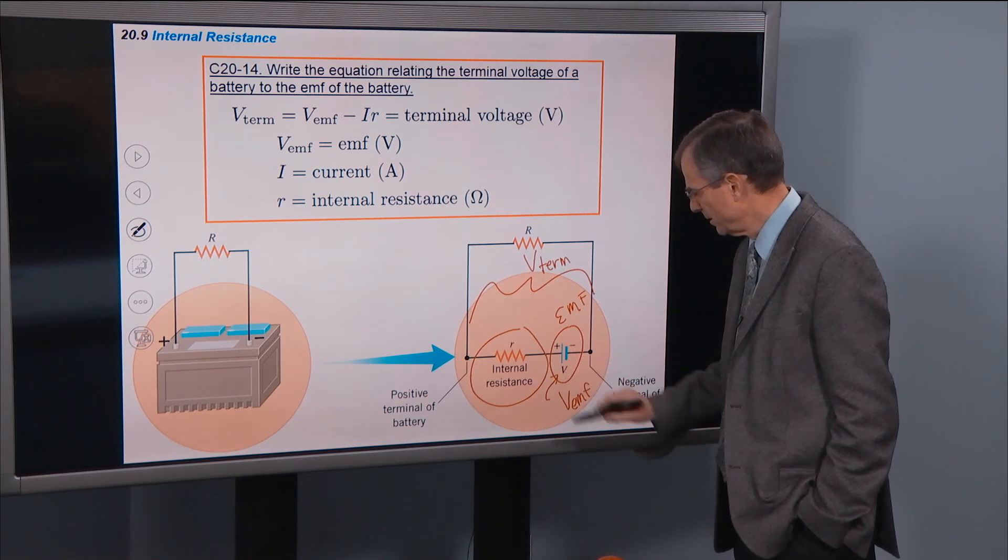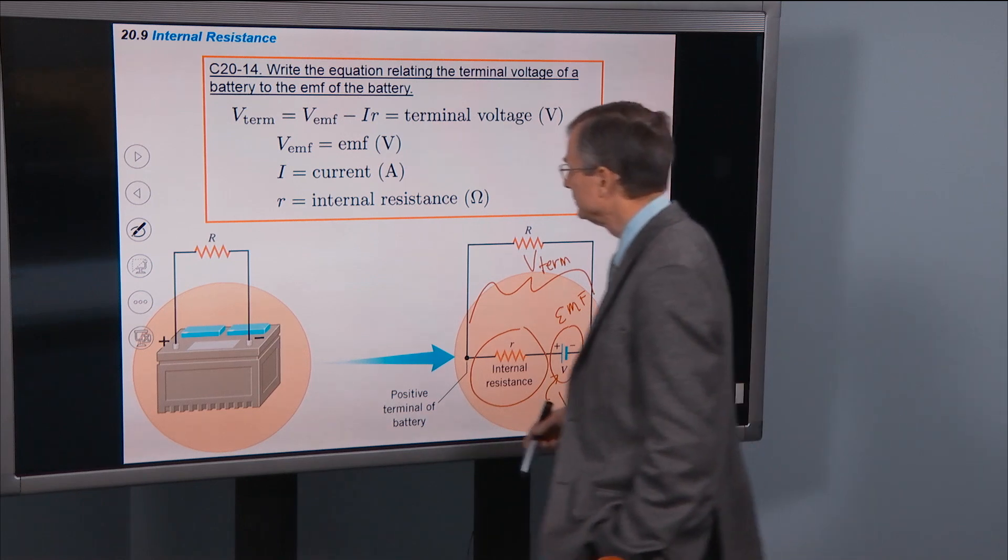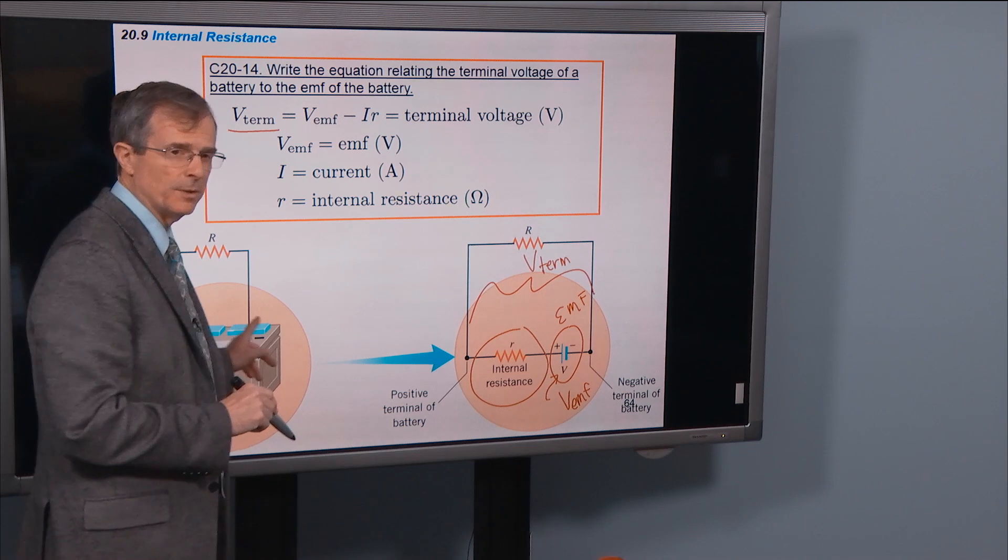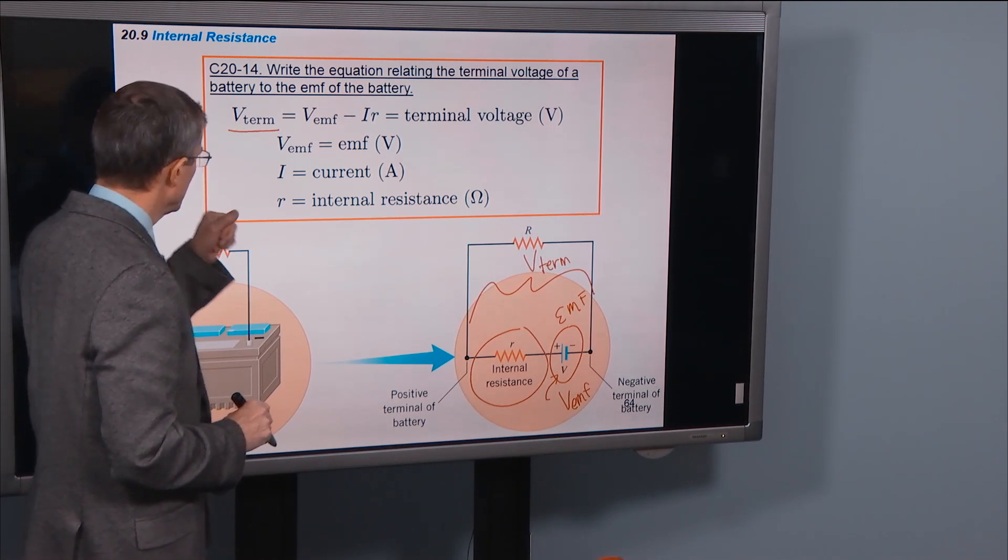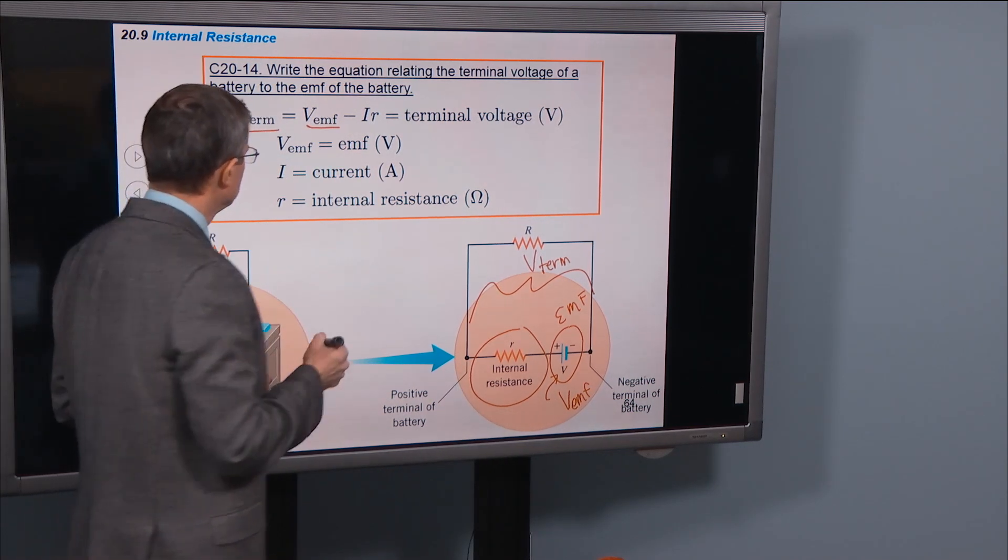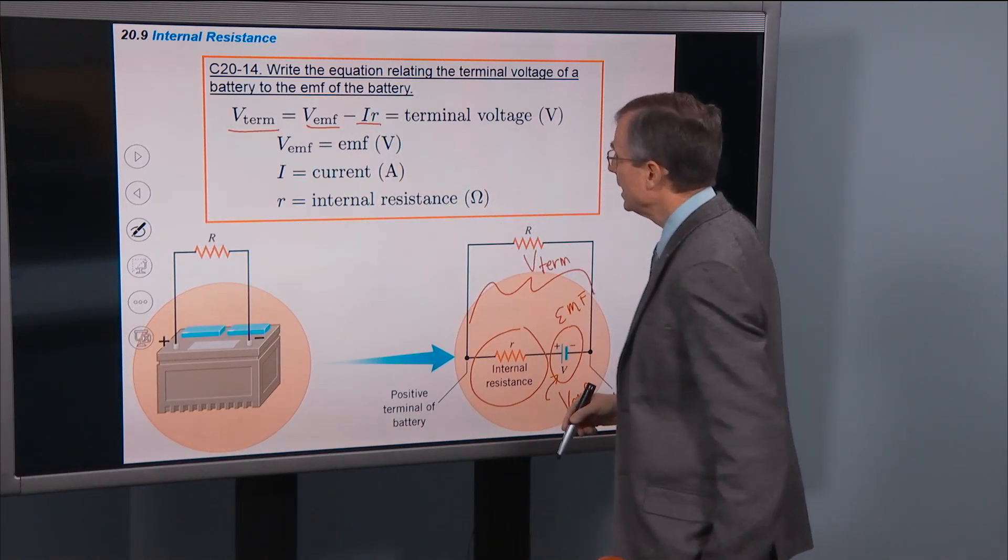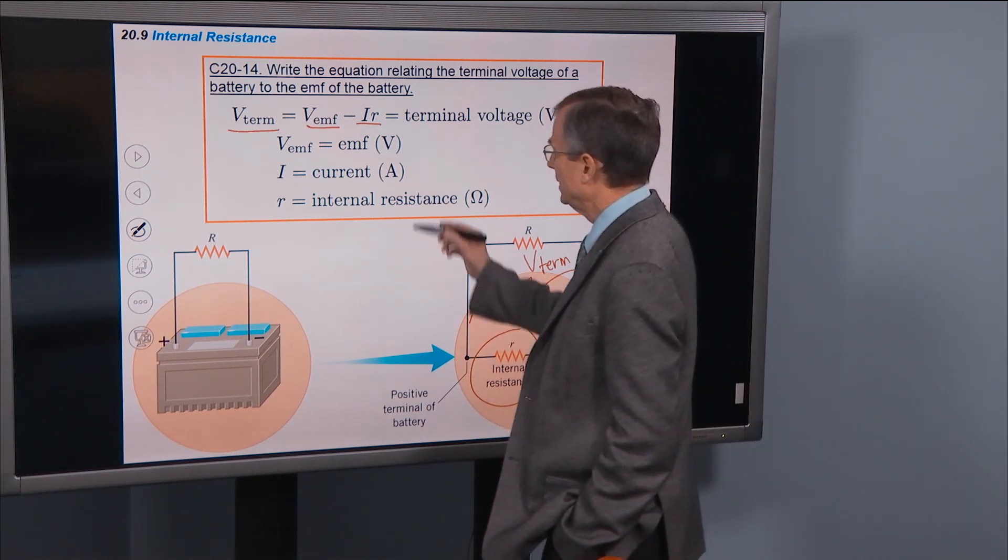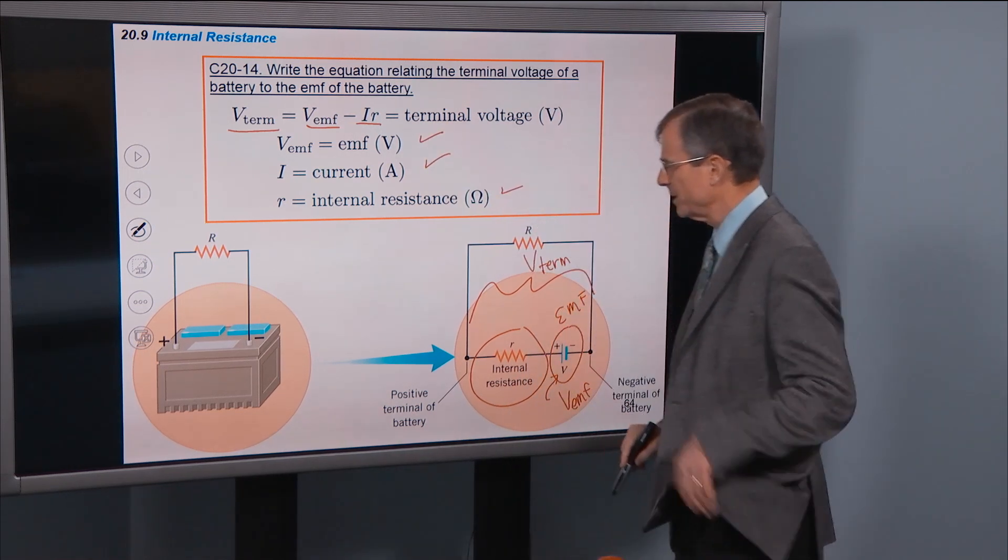That's this internal EMF. And the relationship between them is that the terminal voltage, the voltage that you would measure if you had a voltmeter and you measure the voltage across the terminals, is the intrinsic EMF of the battery minus the current through the battery times the internal resistance. That's the EMF, that's the current, that's the internal resistance measured in ohms.